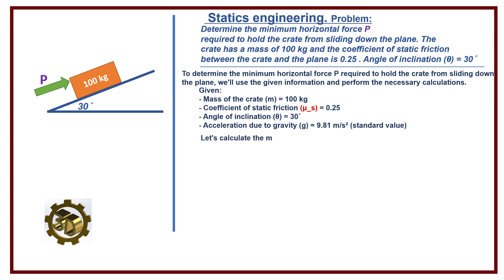Let's calculate the minimum horizontal force P. Weight of the crate: W equals m times g equals 100 kg times 9.81 equals 981 newtons.